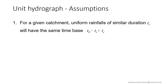Sherman made two assumptions when developing the method. First, for a given catchment, uniform rainfalls of similar duration will produce hydrographs with the same time base, Tb. This assumption comes from the observation that the time of concentration of a catchment only depends on the geometry and the nature of the catchment. The time of concentration is completely independent from the rain.